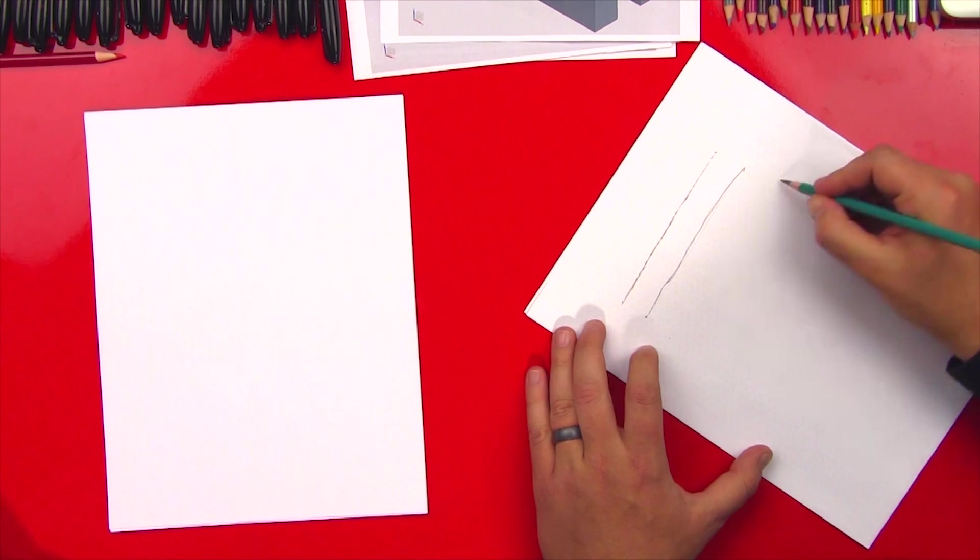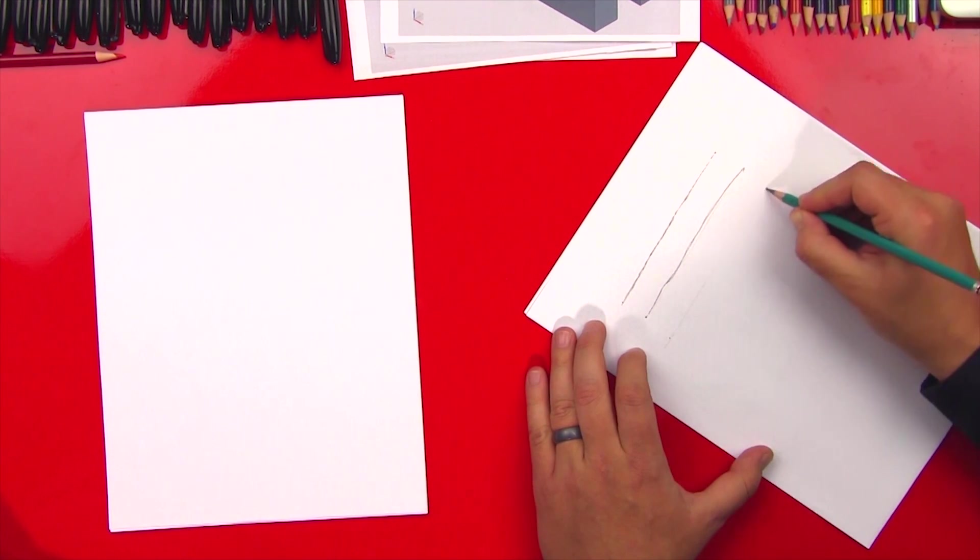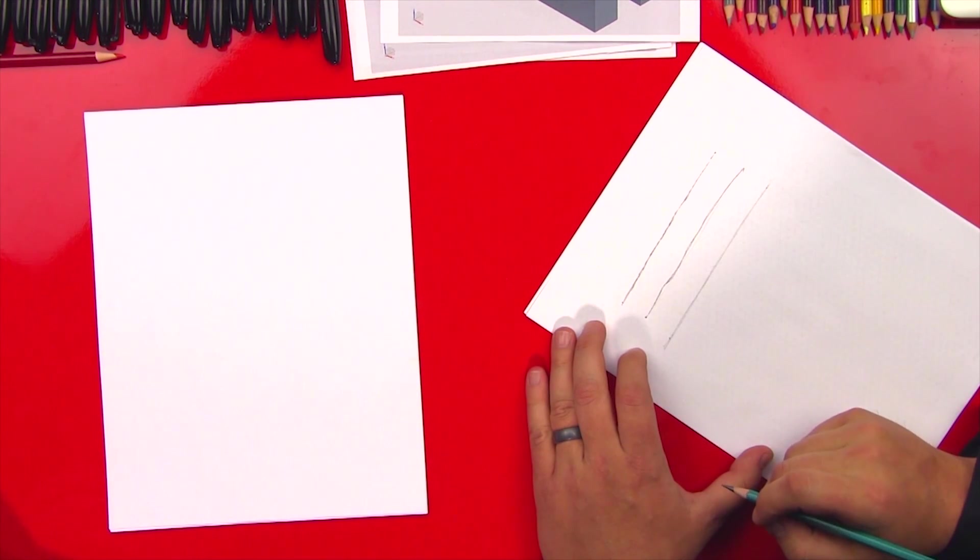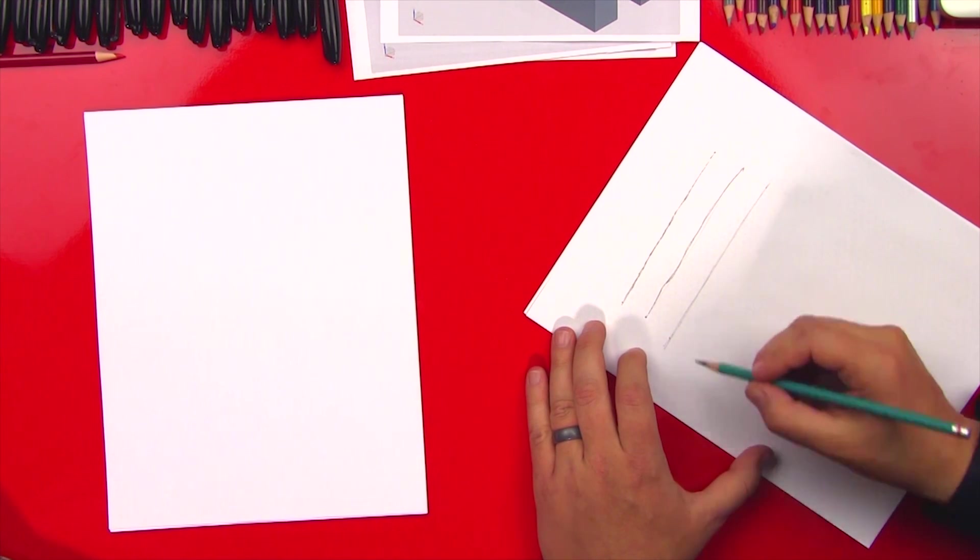And then the last way or the way that we really try to get to is just a straight line that's just really lightly put in there. And you can always darken it up later. You can usually darken it in later.